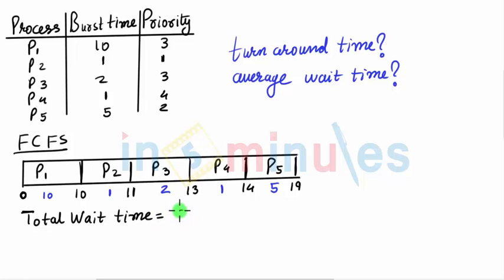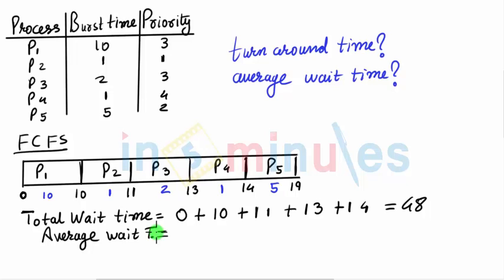For P1 it is 0, for P2 it is 10, for P3 it would be 11, for P4 it would be 13, and for P5 it would be 14. Adding them together we have 48. Average wait time would be 48 divided by 5, which comes out to be 9.6.